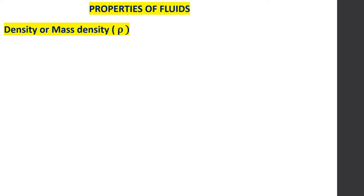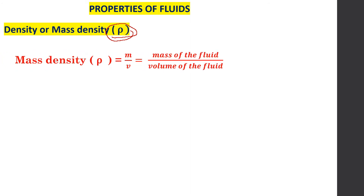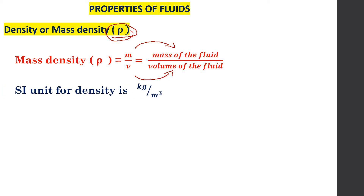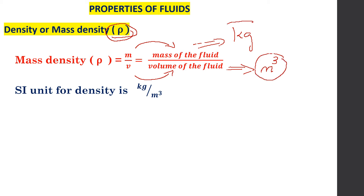The first property is density or mass density, represented by rho (ρ). Mass density ρ equals M divided by V, where M is the mass of the fluid and V is the volume of the fluid. The SI unit for density is kilogram per meter cube, because mass is in kilograms and volume is in meter cube.